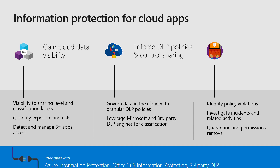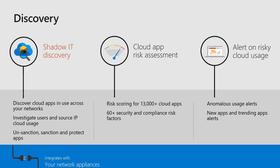Within the discovery phase of Cloud App Security, it gives you shadow IT discovery, Cloud Application Risk Assessments, and alerts on risky cloud usage. Shadow IT discovery refers to the usage of unapproved IT applications by end users — as mentioned, more than 80% of employees in each organization use unapproved IT applications to perform their day-to-day operational tasks, which opens your organization to the risk of exposure to third-party companies.